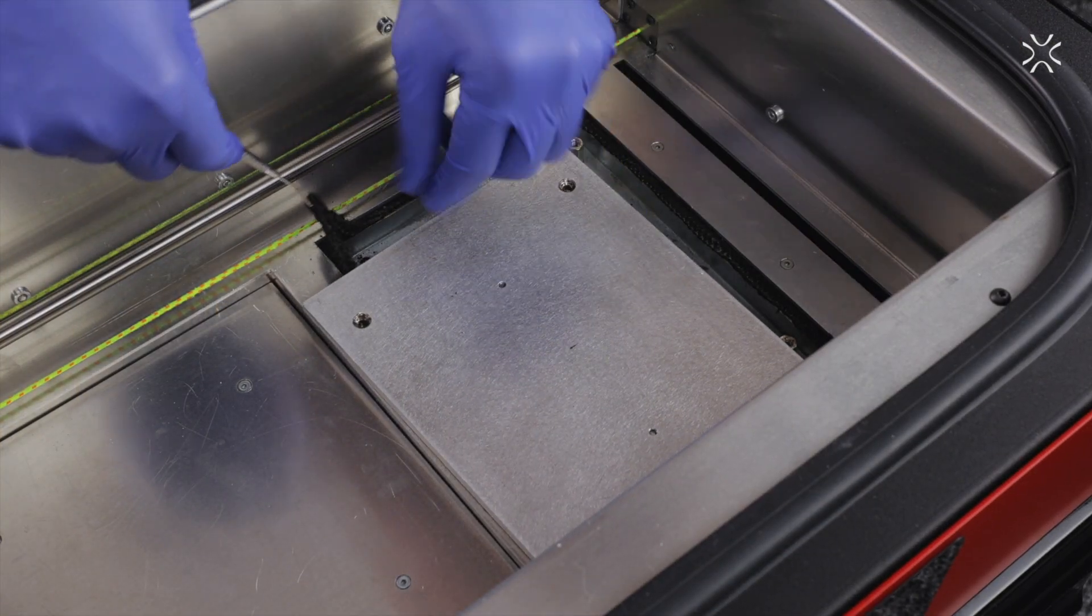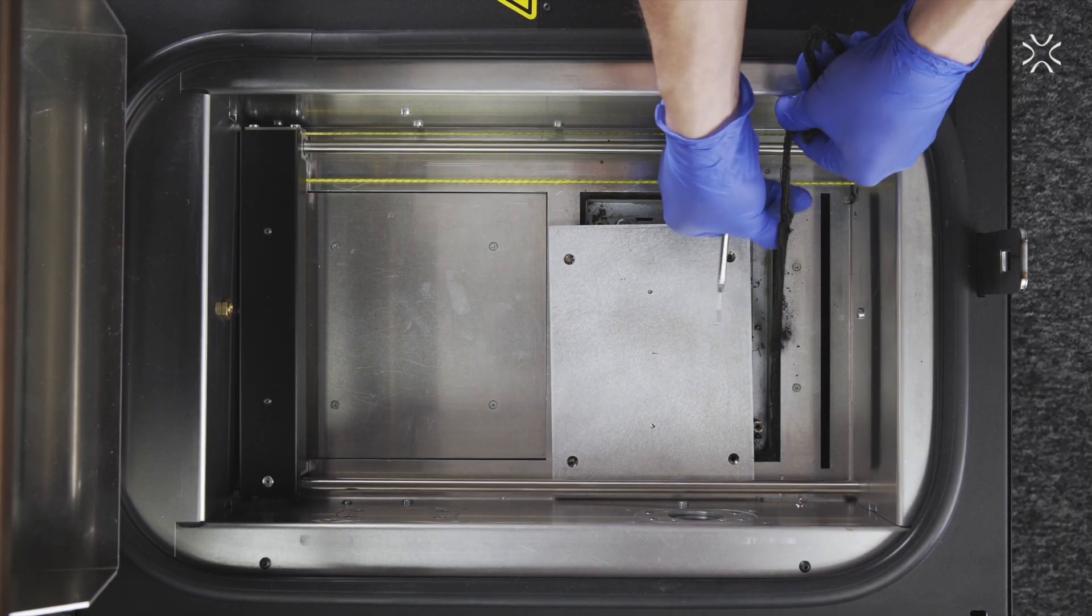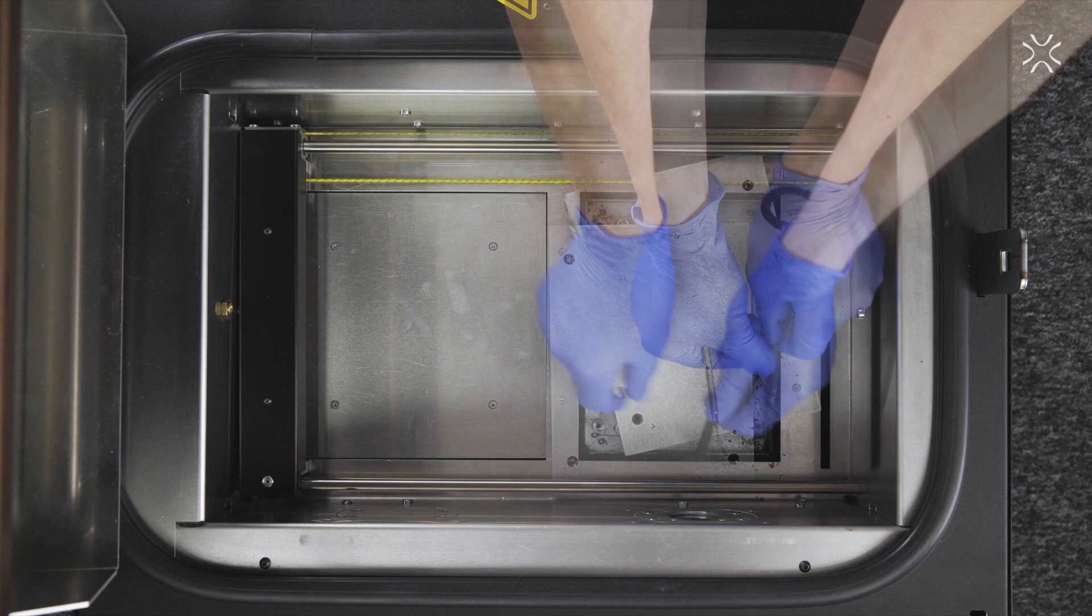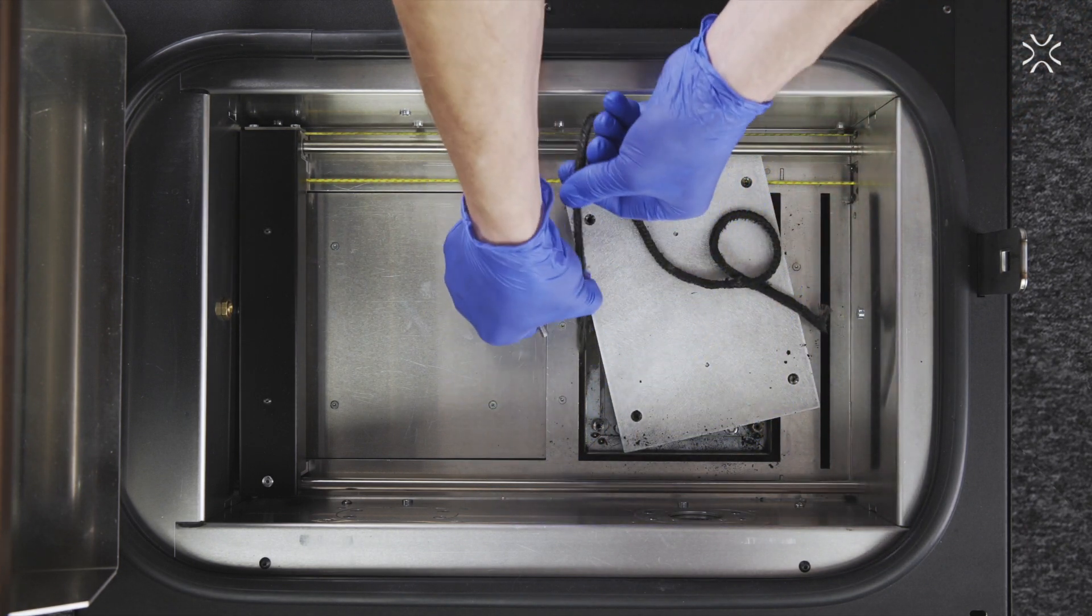Use the stainless steel pick and remove the old insulation from the print bed. Be gentle while moving the print bed's plate to get better access to the insulation.